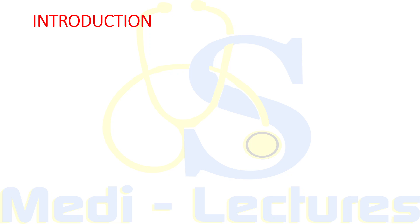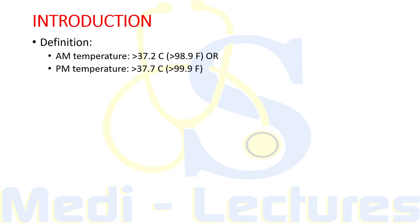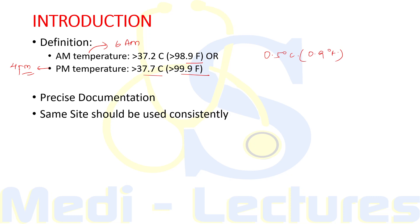Many of you must not be knowing the exact criteria of fever, so let's start with that. Fever is defined as an AM temperature of more than 37.2°C or 98.9°F, or a PM temperature of more than 37.7°C or 99.9°F. The AM temperature is to be measured at 6 AM and PM temperature at 4 PM. The normal daily temperature variation — circadian rhythm — is typically 0.5°C, which comes to around 0.9°F.